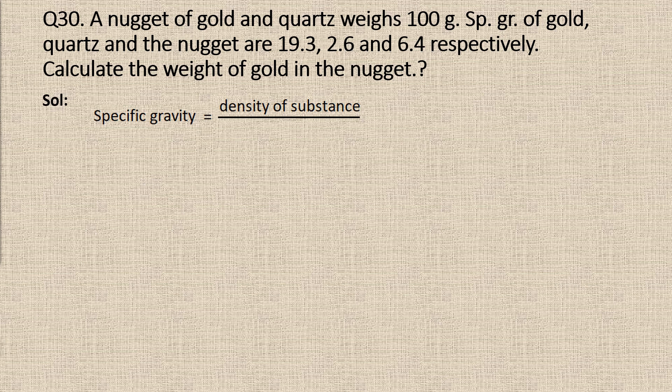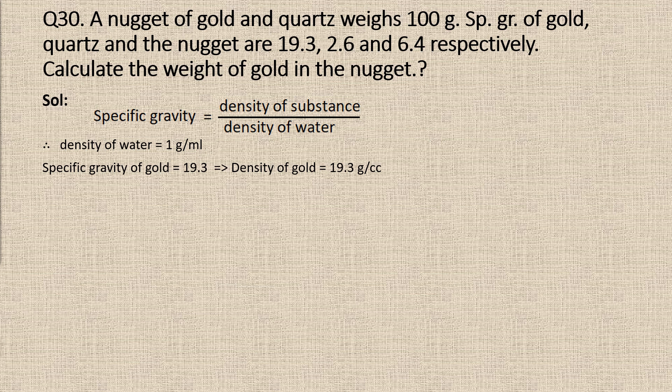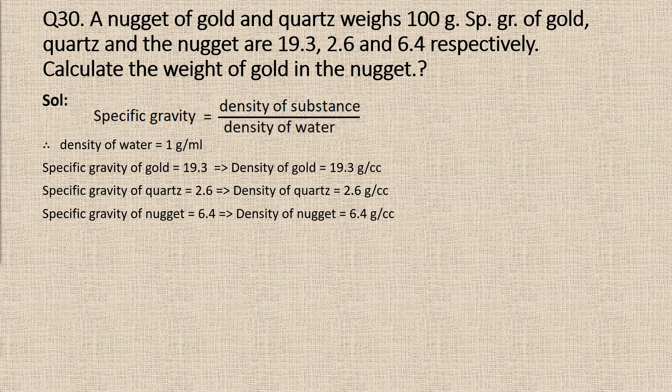Specific gravity is equal to density of substance divided by density of water. Since density of water is equal to 1 gram per milliliter, specific gravity becomes equal to the density of the substance. Therefore, density of gold is 19.3 g/cm³, density of quartz is 2.6 g/cm³, and density of the nugget is 6.4 g/cm³.